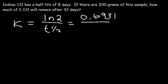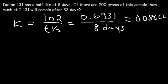This number is always going to be the same. Radioactive decay problems always involve first-order kinetics reactions, so you can always use this equation. The half-life is eight days, so 0.6931 divided by 8 equals 0.08664. This is a rounded answer, so our final answer won't be exactly 12.5, but it should be very close.